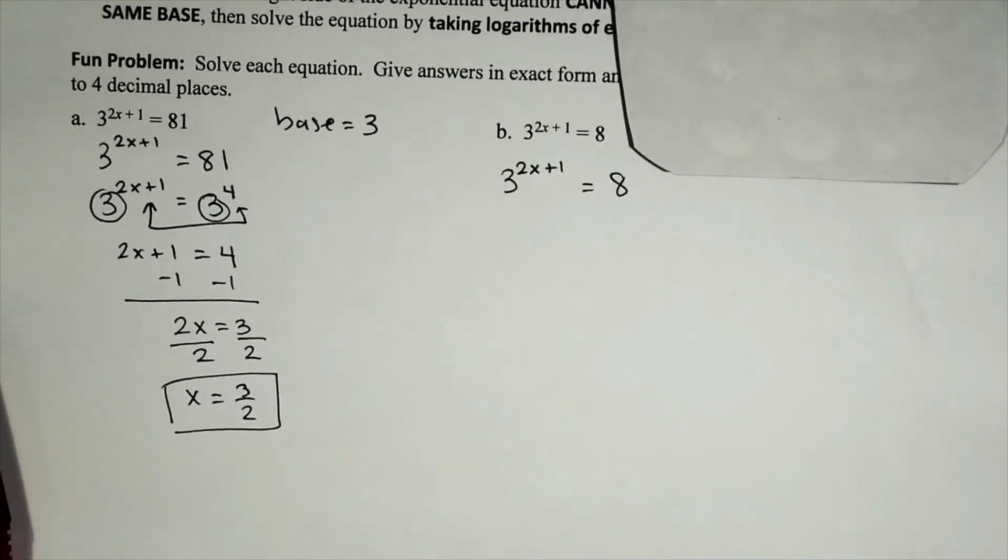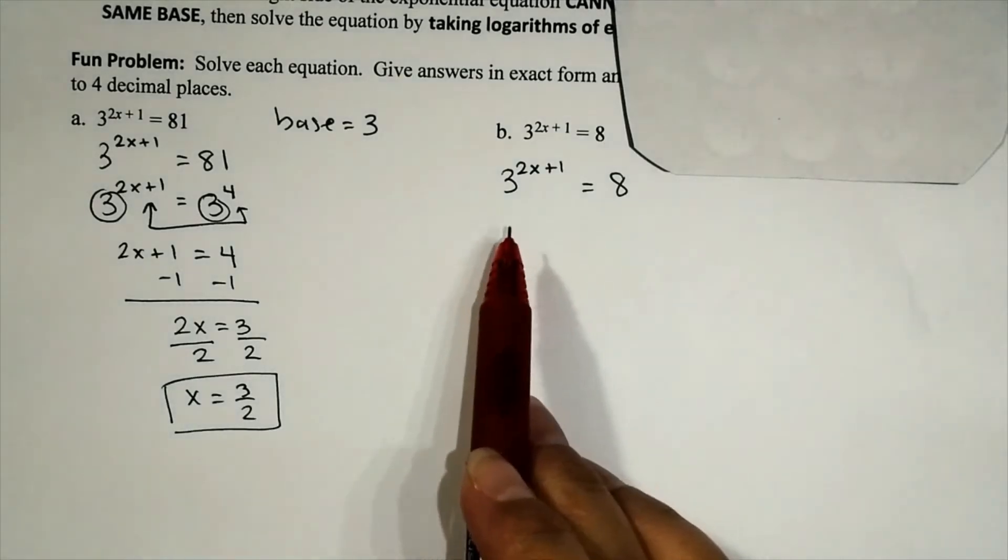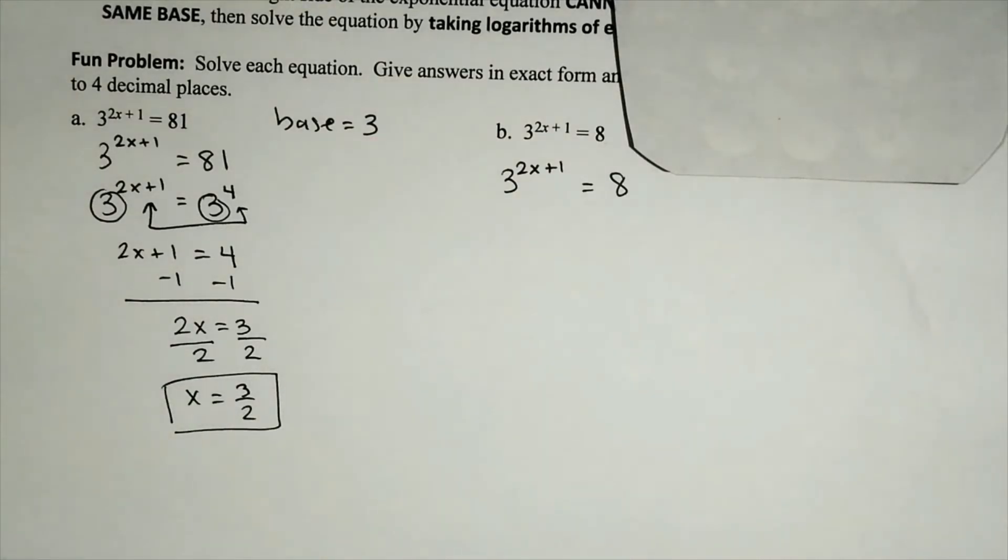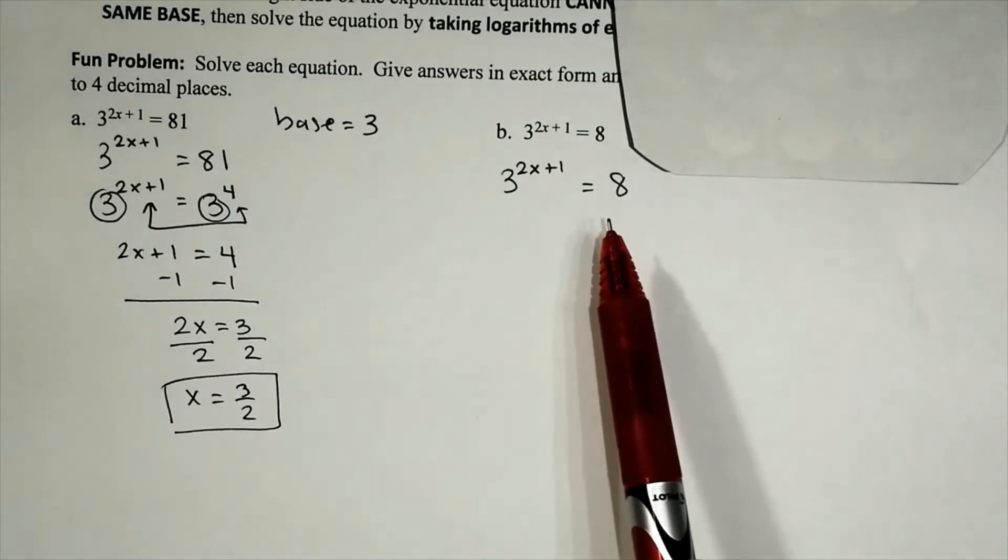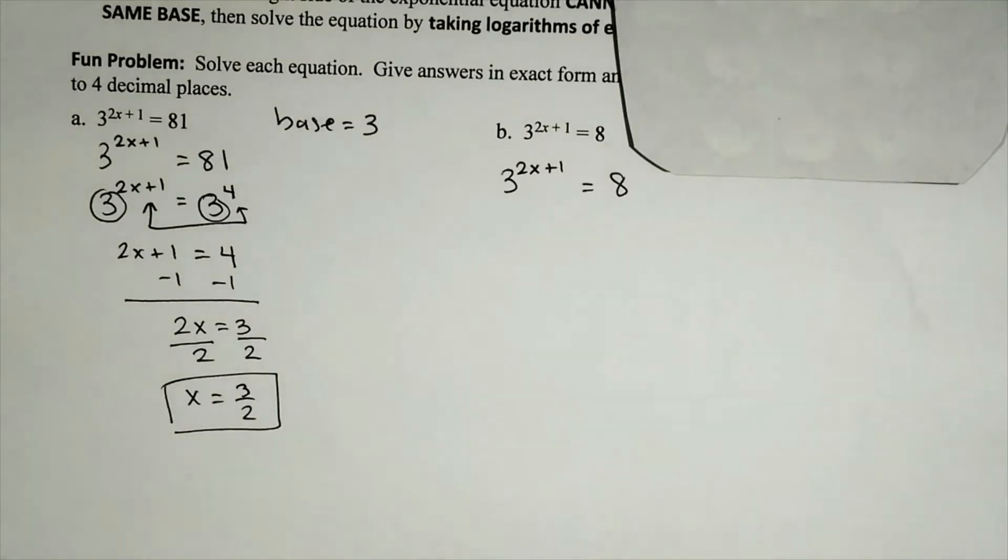Coming to our problem. We have an exponential equation, so it would be nice if we can easily fix it so the bases are the same. The base on the left side is 3. Last time I checked, 3 is a prime number, so it's either going to be base 3 or bust. 8 is not a power of 3, so it is not going to happen. So in this case, unfortunately, unlike problem A, we cannot easily fix it so the bases are the same.